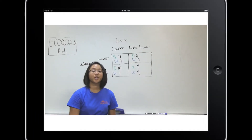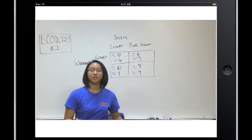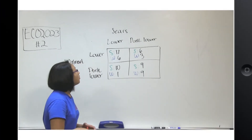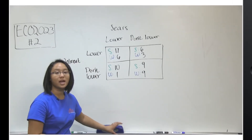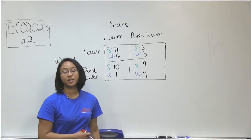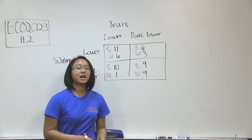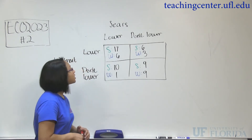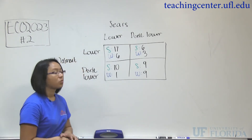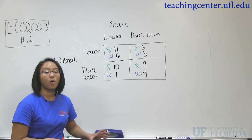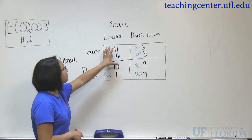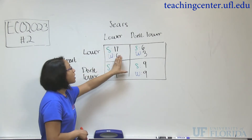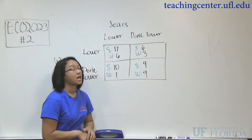In this question, we're going to cover a game theory question. Usually when we have a game theory question, we're trying to find out who has a dominant strategy. A dominant strategy is when one column or row is more profitable than another column.